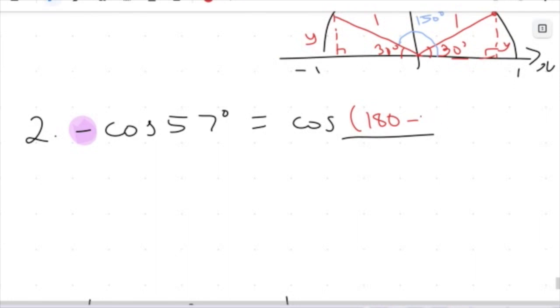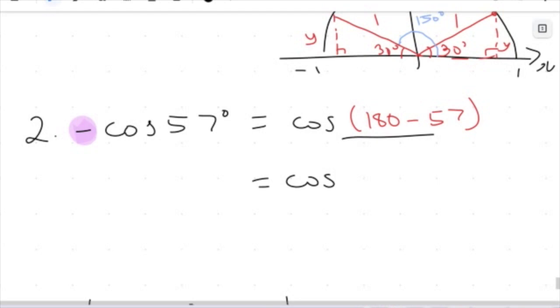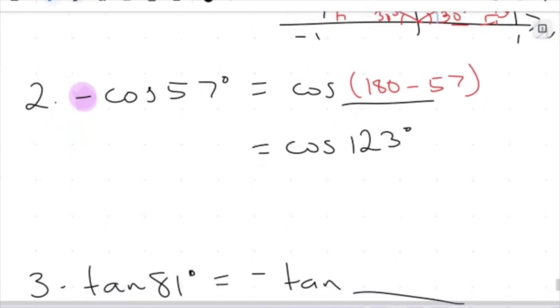Now in this case, the angle in question is going to be 57 degrees. So what we're going to get here is going to be cos of 123 degrees. So if you were to put in cos of 123 into your calculators, put in cos of 57 and put a negative in front of it, you will get the exact same answer in your calculator. It won't be a pretty one, but it will be the same.